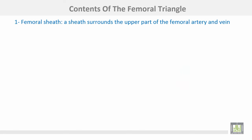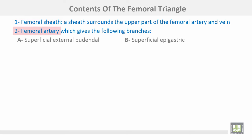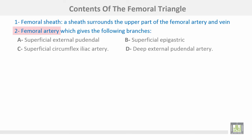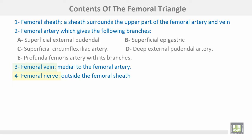The contents of the femoral triangle: number one, the femoral sheath, which surrounds the upper part of the femoral artery and vein. The femoral artery gives the following branches: superficial external pudendal, superficial epigastric, superficial circumflex iliac, deep external pudendal, and profunda femoris artery. The femoral vein is medial to the femoral artery.